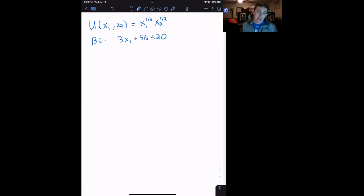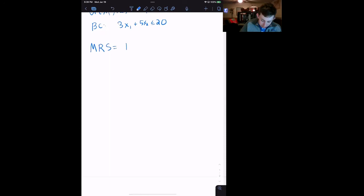So the price of X1 is 3 and the price of X2 is 5. We know from our previous videos that the way we're going to solve this is we'll say the marginal rate of substitution equals the ratio of the prices. And right off the bat, we know the ratio of prices is three-fifths.